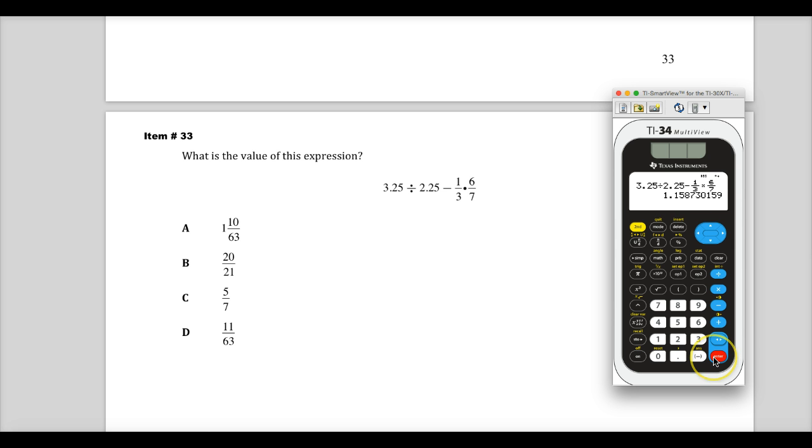So, just type it all in, hit enter, and you get a final answer of this. Well, what the heck am I supposed to do with that? I'm going to convert it into a fraction. So, I'll hit second. This little arrow pointing to F, arrow pointing to D, means it'll switch from fraction to decimal or decimal to fraction. Hit enter, and it gives me 1 and 10 sixty-thirds. So, my answer to this question is A.